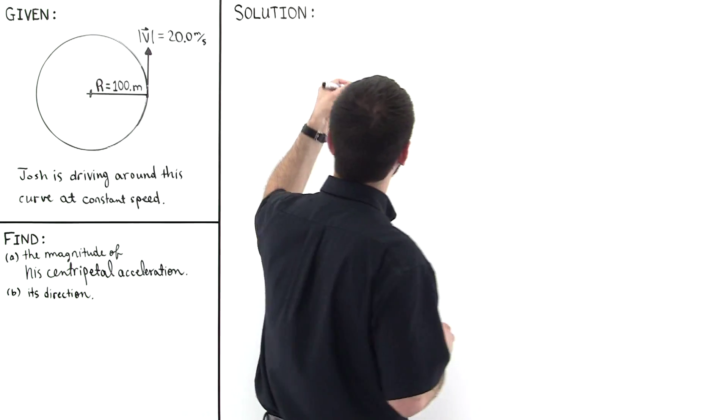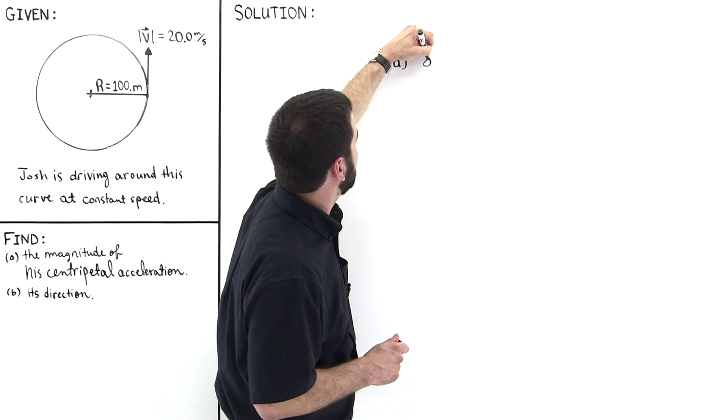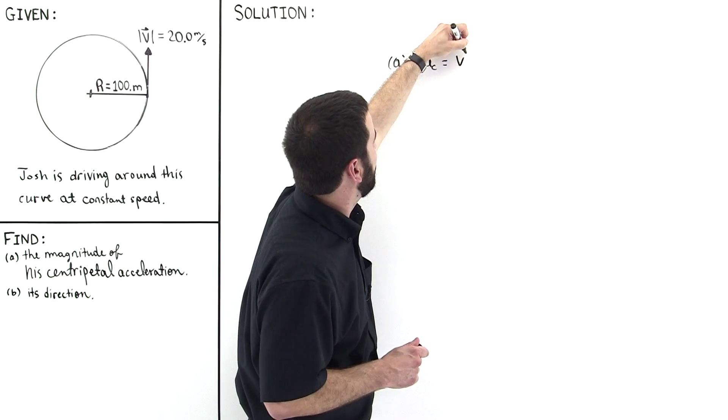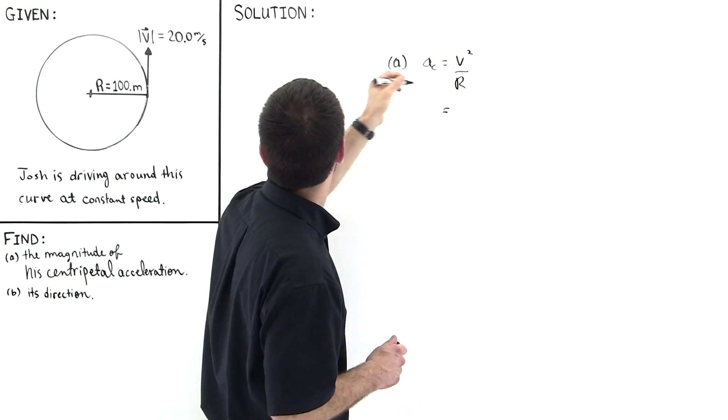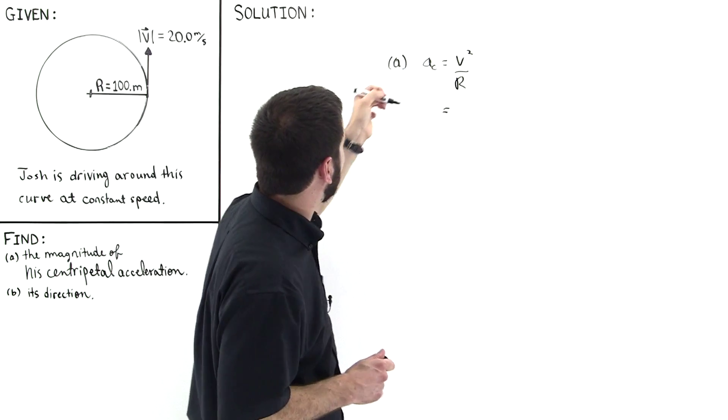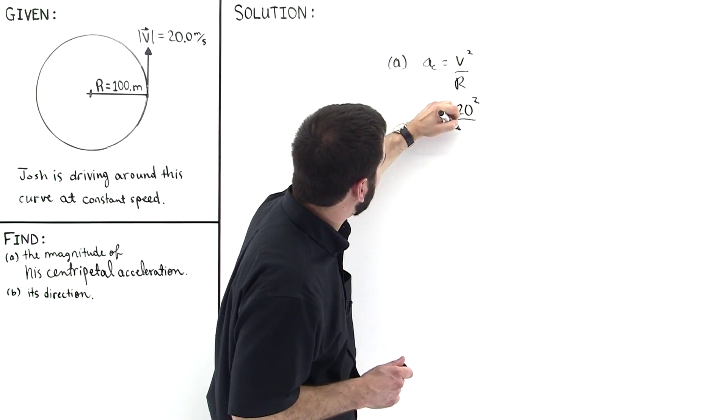So for part A, the magnitude of the centripetal acceleration is given by V squared over R. So this is simply equal to, his velocity magnitude is 20, so we have 20 squared divided by the radius which is 100 meters.